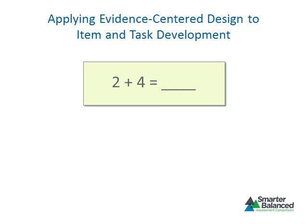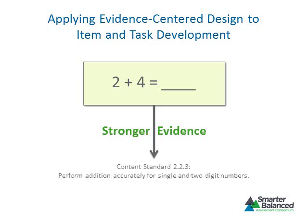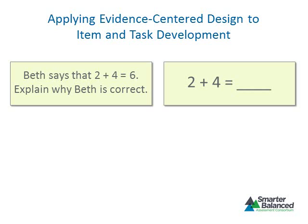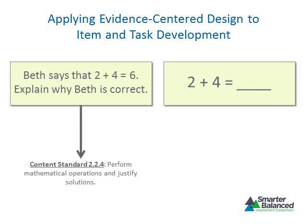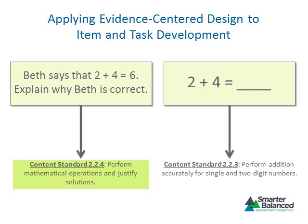One possible redesign is to simply have the student construct a response that indicates the result of adding two digits. To be clear, an evidence-centered design approach does not suggest that items and tasks should avoid having students explain their reasoning. Rather, it aims to ensure that the information elicited by an item is appropriate for the claim Smarter Balanced seeks to make about the achievement of content standards. The original item would provide appropriate evidence for a standard focusing on performing mathematical operations and justifying solutions, while the revised version elicits appropriate evidence about a student's ability to add.